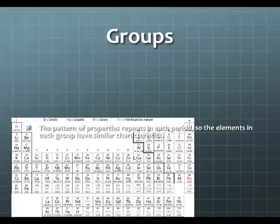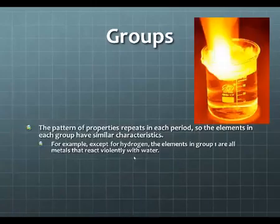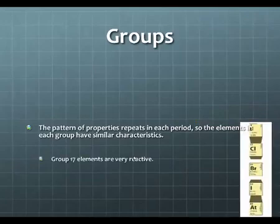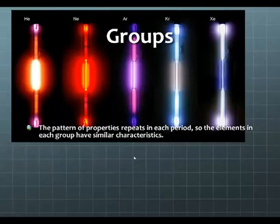The pattern of properties repeats in each period, so the elements in each group have similar characteristics. So for example, except for hydrogen, the elements in group 1 are all metals that react violently with water. Group 17 elements are very reactive. And specifically, group 17 elements want to react with elements found in group number 1. Group 18 elements are generally non-reactive. The picture that you see here are the noble gases. And the noble gases are having some electrical current added to them. And you can see that each one of the noble gases, as electrical current is added to them, they tend to glow. Much like neon signs.